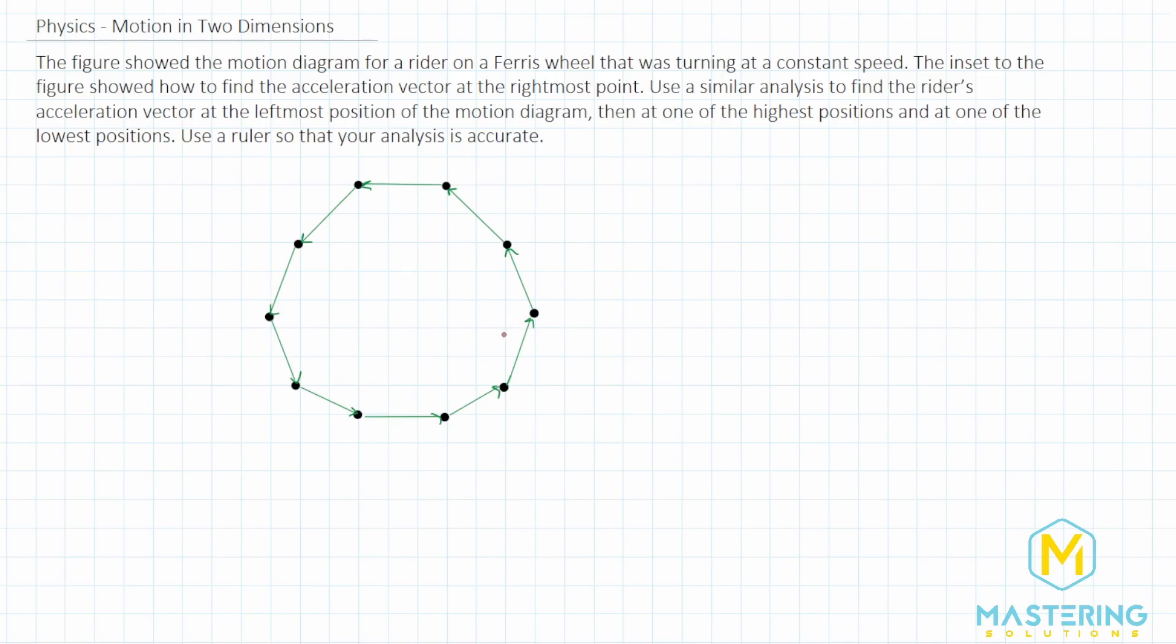I'll use a different color to represent what we're going to do here. But what they talked about in the book is that we're finding the change in the velocity to get the acceleration vector. If you remember, acceleration is equal to the change in velocity over the change in time. Here we're using a graphical representation to find the change in the velocity.